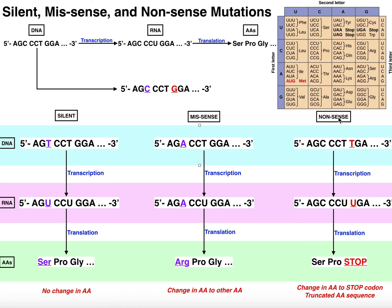Now let's look at a specific nonsense mutation. I'm going to mutate the red guanine into a thymine. So now my gene sequence is AGC, CCT, TGA, and then there are other triplet nucleotides after this — keep that in mind, it's very important for this example. Transcribing this into mRNA: AGC, CCU — since all thymines become U's — UGA, and then so on and so forth.